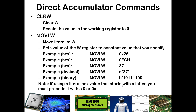You can also set an initial value other than zero in the W register using the MOVLW command. This is both a literal-oriented and a register-oriented command because it puts a literal into a register. It will move whatever constant value you specify into the W register. This is a very important command used quite a lot because we cannot directly put a value into a register other than zero — we must first put it into W and then move it from W into the register of interest.